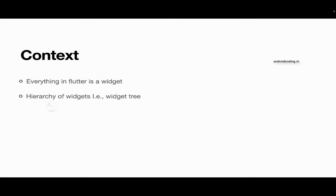All these widgets are available in a hierarchy — one over the other — which forms a widget tree. Within the widget tree, you need to handle all the widgets. Out of all the widgets, how can you handle a particular one? Inside the widget tree, if you want to handle a particular widget, you need to make use of context. Context is nothing but a handle to the location of the widget.